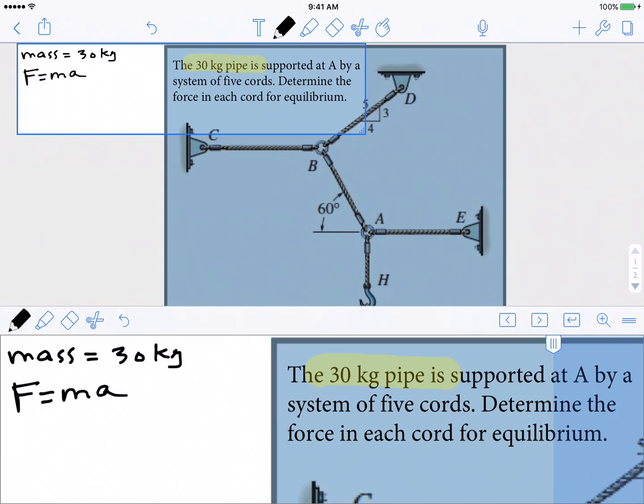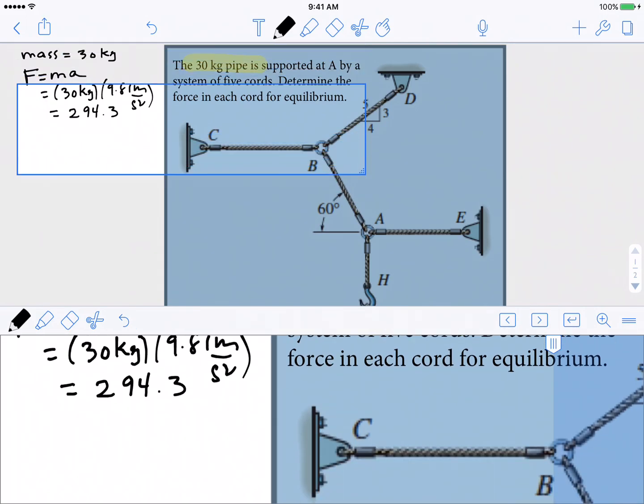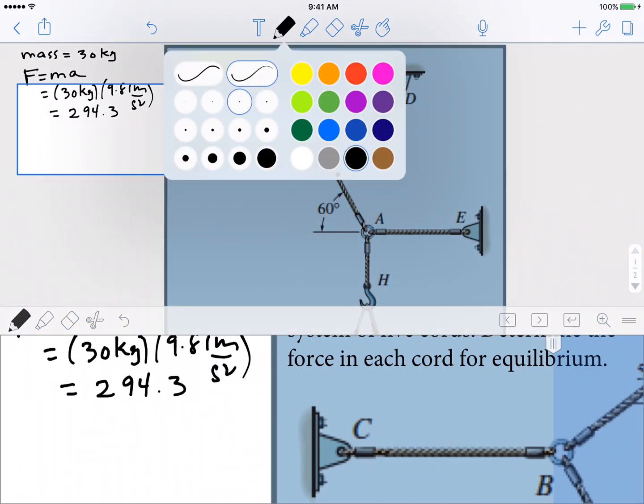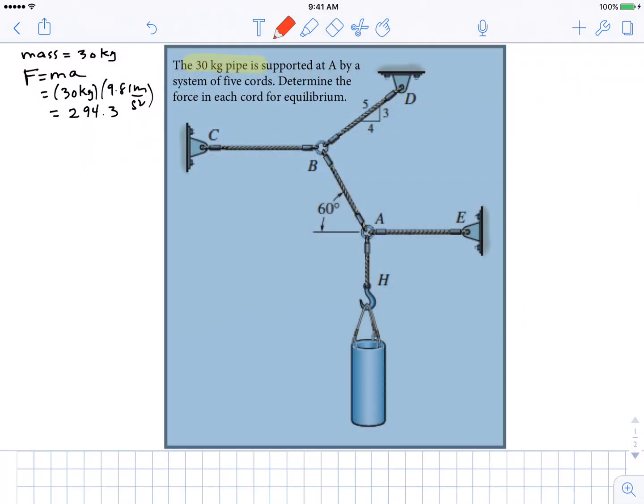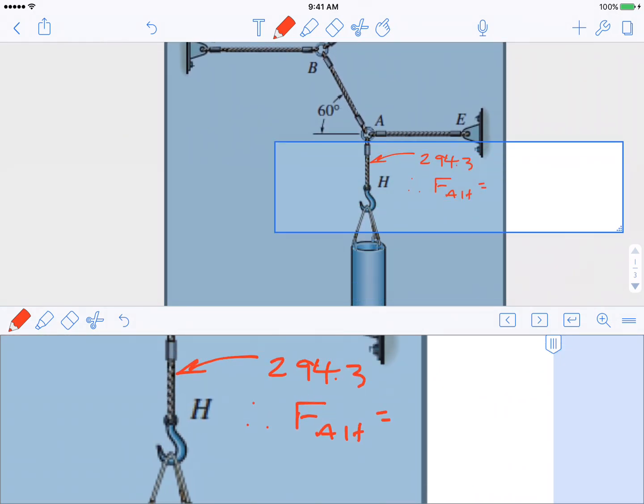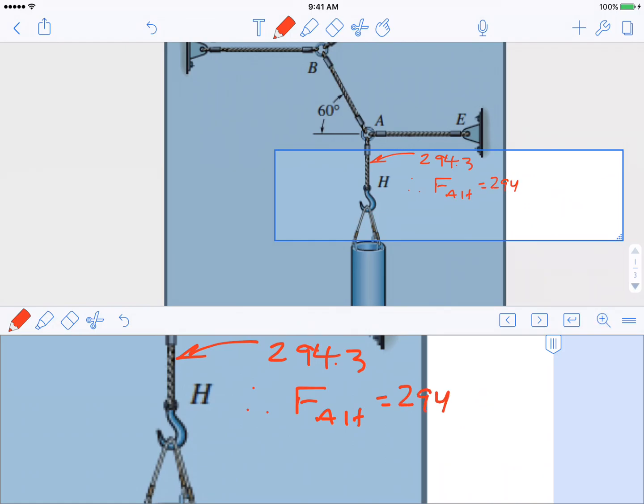We need to remember this basic formula and take the 30 kilogram mass and multiply by 9.81, which is the acceleration due to gravity. When we do that, we obtain that this pipe is exerting a force of 294.3 on that hook. Over here on the main diagram, this value right here is 294.3. That is the tension in FAH. Or we might write this as FAH is equal to 294 newtons.